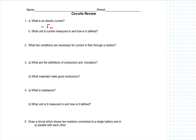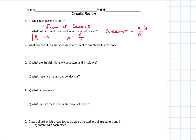Current is the flow of charge, or the movement of charge. Current is measured in amps. One amp is defined as charge in coulombs per unit time. Current is equal to the change in charge over the change in time: I = ΔQ/Δt.